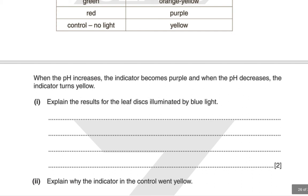Explain the results for the leaf disc illuminated by blue light. Blue light is absorbed by the plant and used for photosynthesis, so carbon dioxide is used up and its concentration decreases. This leads to a rise in pH because carbon dioxide dissolves in water as carbonic acid — if carbon dioxide is used up, there is less carbonic acid in solution, making it more basic. Explain why the indicator in the control went yellow. In this case there is no photosynthesis, but respiration is still occurring, so carbon dioxide is produced by the plant, leading to a decrease in pH by increasing the acidity of the solution.